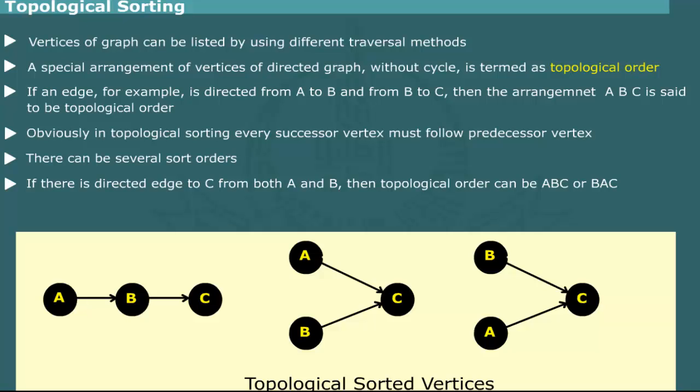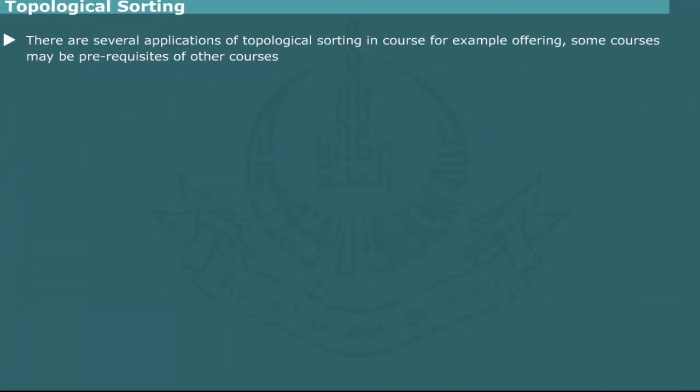Topological sorting has several applications. For example, in certain course offering, some courses may be prerequisites for other courses. A sort order would list the order in which the courses can be taken.